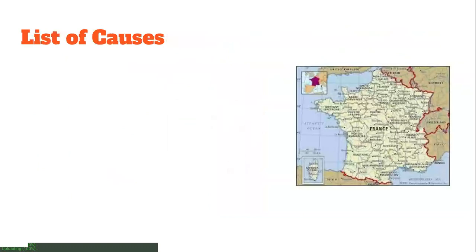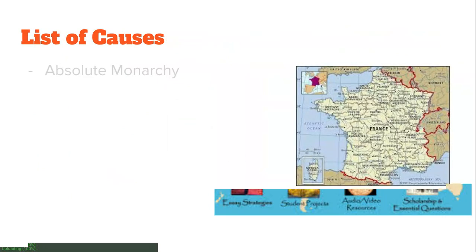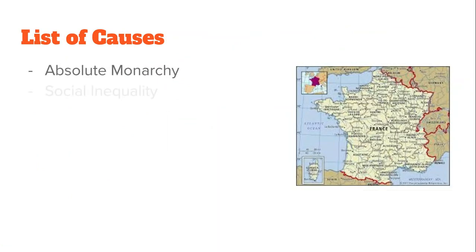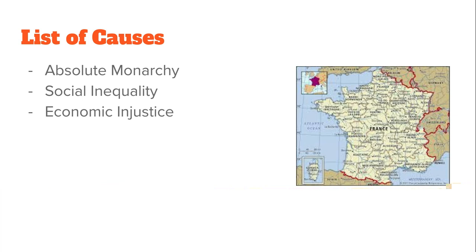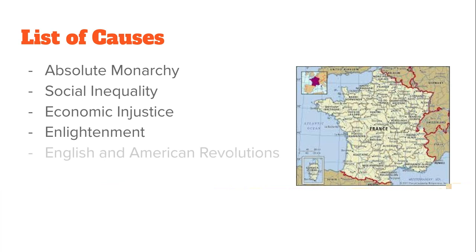Let's take a look at the list of causes. First, we have the absolute monarchy in France at the time. We have social inequality throughout society. We have economic injustice and economic problems that existed in France during the 1700s. We have the thoughts of the Enlightenment and the different viewpoints of thinkers during the Enlightenment, which influenced the French Revolution. And finally, we have the English and American Revolutions, which laid a foundation for the French revolutionaries.